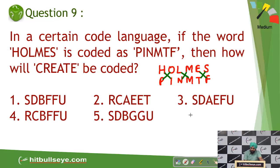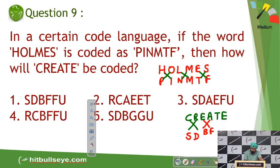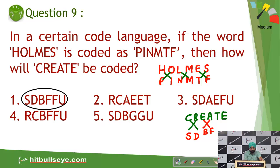Now you want to create the code for the word CREATE. You need not make the whole code. After reversing the letters as done earlier, the code for R will be S, followed by D. S and D appear in three options: one, three, and five. Then the code for A will be B and E will be F, giving SDBF. Only one option matches, so the first option becomes your answer.